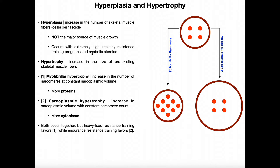Individuals who cheat with anabolic steroids can actually demonstrate some hyperplasia as well. Obviously that's not a normal biological response, and they're going to see elevated levels of hyperplasia over an average person just doing a high intensity resistance training program. If you're doing a more moderate or low intensity resistance training program, you shouldn't expect to really see any hyperplasia.